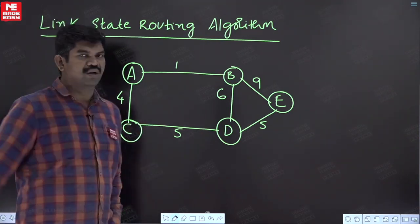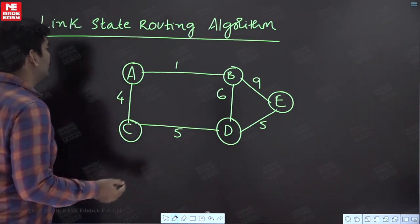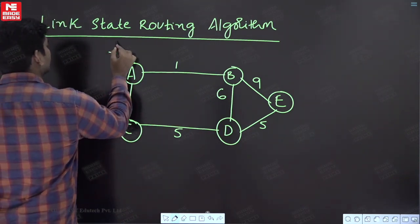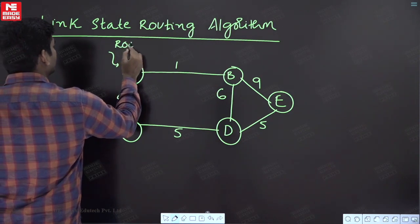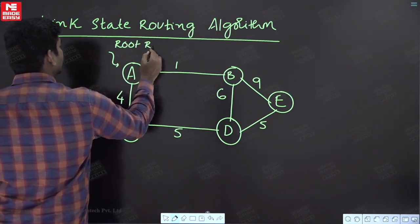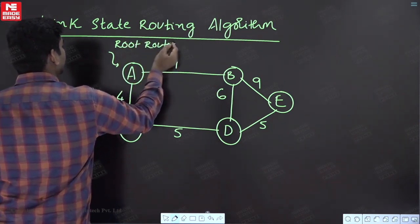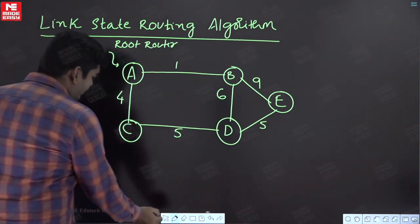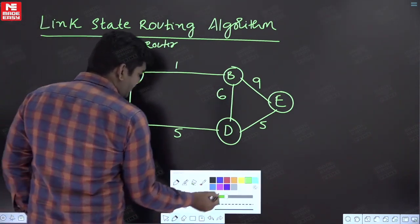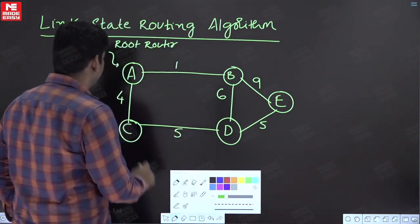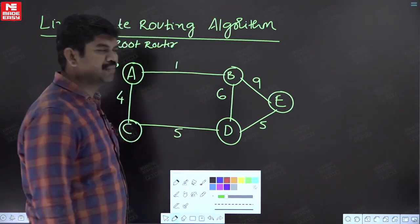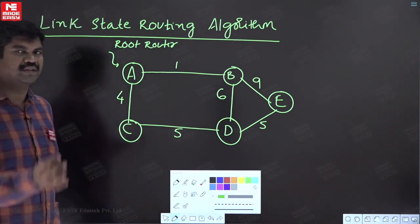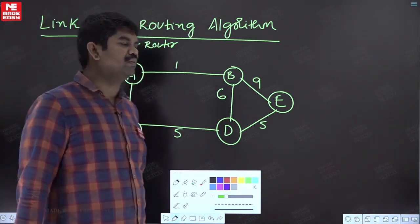So these are all the routers, and out of them any one router will be chosen as the root router. I am choosing A as the root router. In case of link state routing, initially all the routing tables might be empty, but how will they get global information just like in distance vector routing?